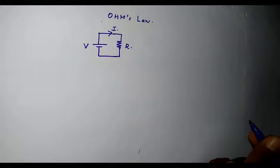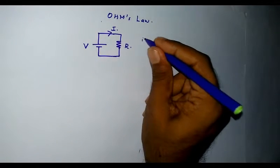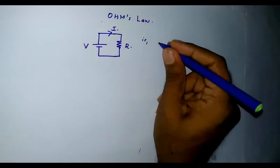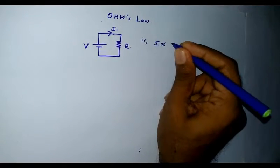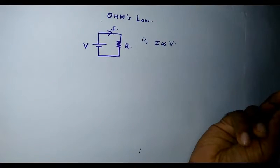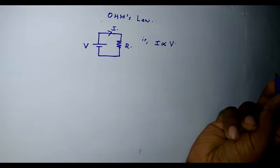Ohm's Law states that the current flowing through the resistor R is directly proportional to the potential difference across its ends. That is, we can write current I is directly proportional to the potential difference V.